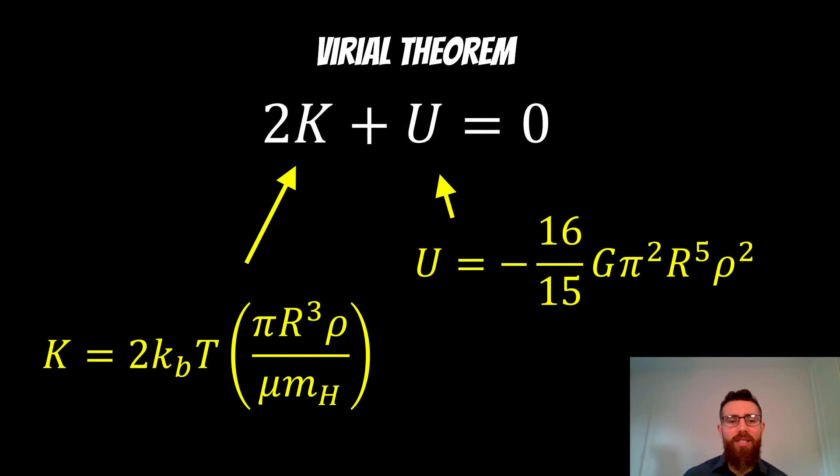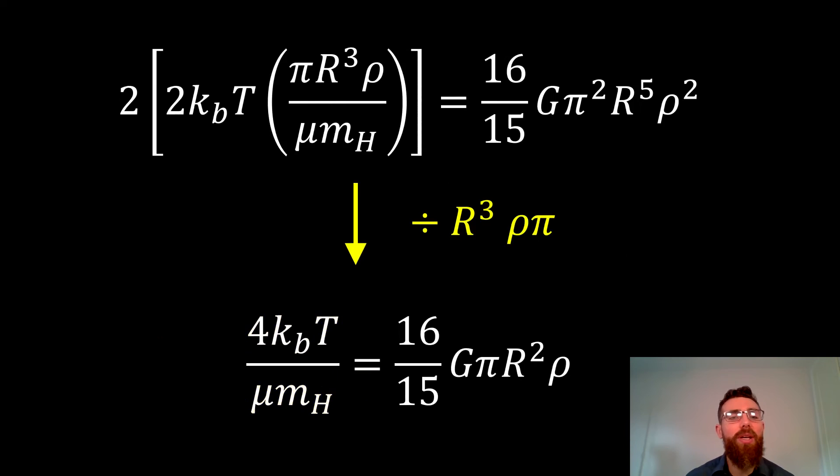We can then equal them to one another. Because we've got a negative gravitational potential energy, it means that our 2K is going to basically equal minus U, which then becomes positive. At the top there, we've put them in and we've equaled them to one another.